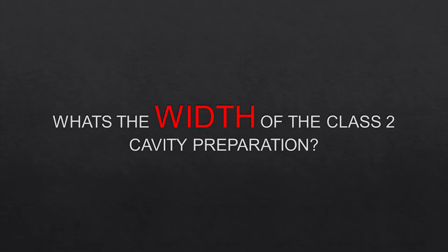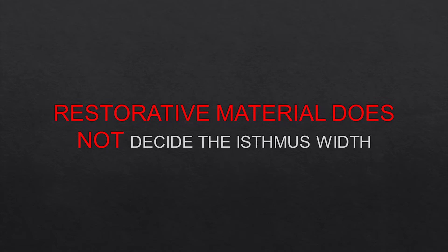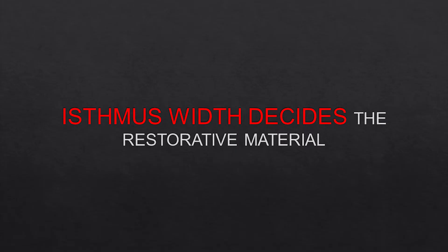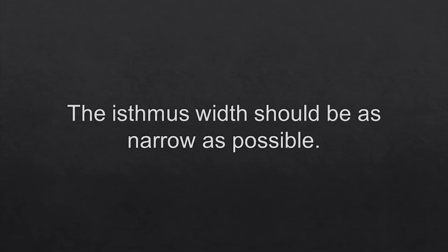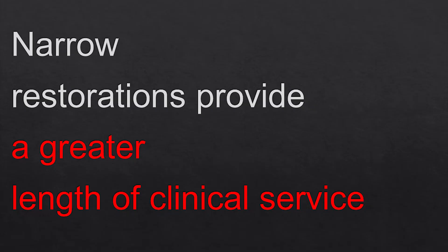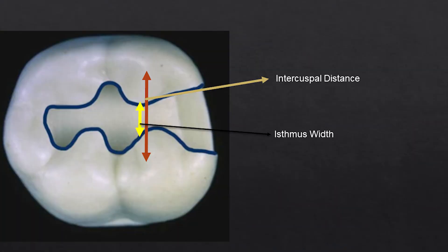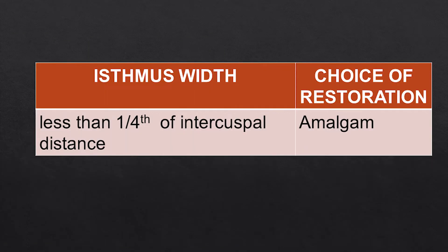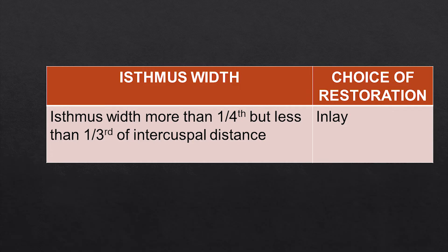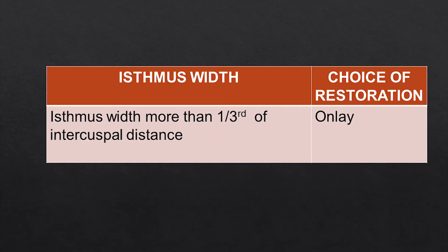The design of the isthmus is a very important question in viva and entrance exams. Most students say one-fourth or one-third without realizing that it is not the restorative material that decides the width of the isthmus — it is the width of the isthmus which decides the type of restorative material. If the width is less than one-fourth of the intercuspal distance, amalgam can be used. If it is more than one-fourth but less than one-third, you must go for an inlay. If it is more than one-third, it also has to be an inlay.